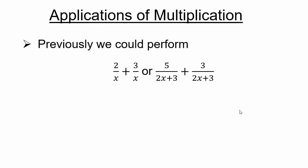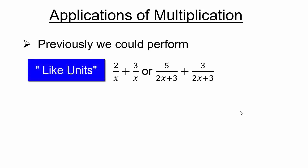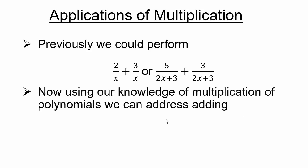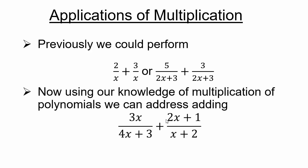Remember how before we learned to add fractions, we had to get like units? So if we had 2 over x plus 3 over x, then 1 over x is the common unit, so we can say 2 plus 3, giving us 5 over x. The next one would be 8 over 2x plus 3, because 1 over 2x plus 3 is the common unit. So a natural question to ask is: can we use our previous knowledge to address these kinds of problems?